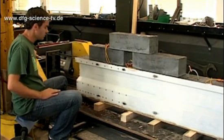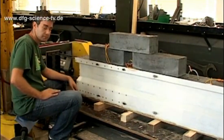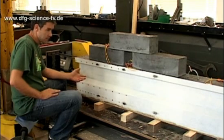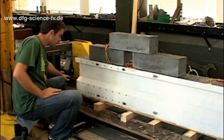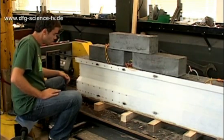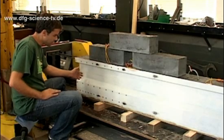The strands are tensioned on the transverse yoke and that means that none of the pre-stressing force is in the beam yet. When the beam is pre-stressed, the pre-stressing force in the strands is released, causing the pre-stressing force to be transferred into the concrete through bond.